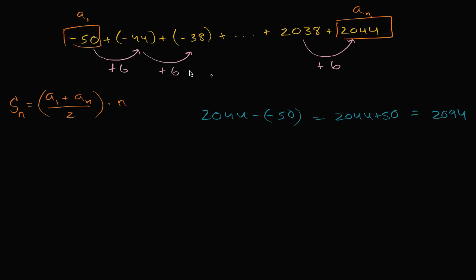So if I'm adding six on every term, how many times do I have to add six to increase by 2094? Let's just take 2094 and divide it by six to figure that out. So six goes into 20 three times. Three times six is 18. Subtract, 20 minus 18 is two. Bring down the nine. Six goes into 29 four times. Four times six is 24. Subtract, 29 minus 24 is five. Bring down the four. We have a 54. Six goes into 54 nine times. Nine times six is 54. And we are done.